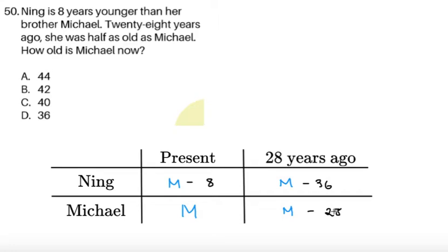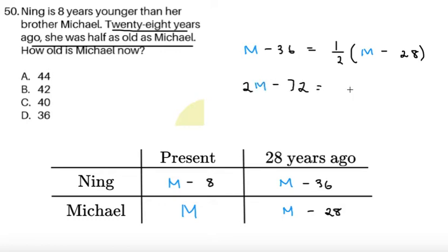We would use this sentence. 28 years ago, she was half as old as Michael. So, 28 years ago, Ning is half as old as Michael. The age or the number M minus 36, this is the age of Ning. Should be half of the age of Michael. M minus 36 should be one half of M minus 28. And all we have to do is just solve for M. Now, let's multiply both sides by 2 to remove the 2 here. Multiplying both sides by 2, I'll be getting that 2M minus 72 equals M minus 28. And then, we have to solve for M.